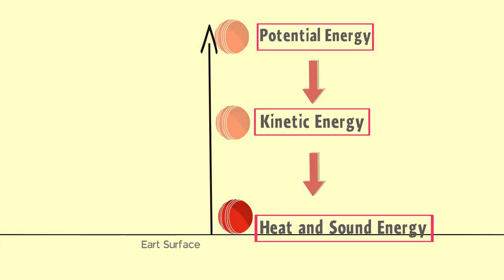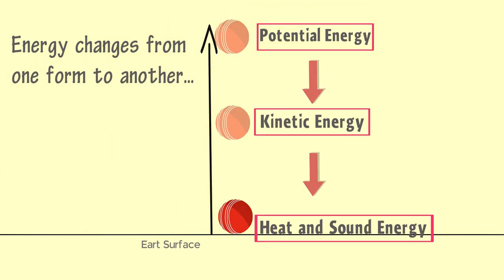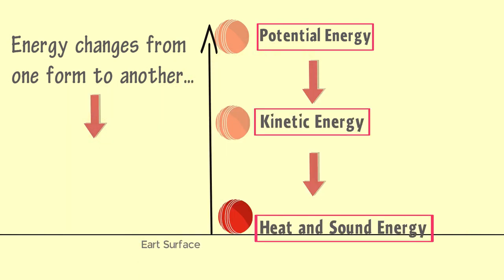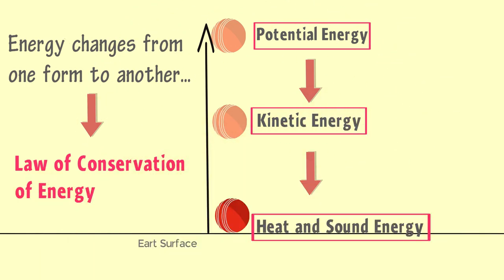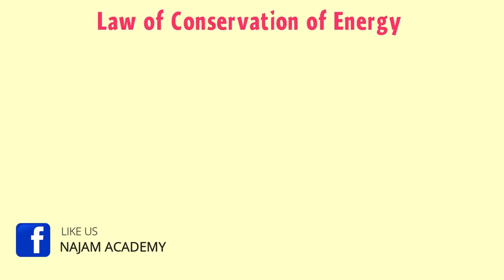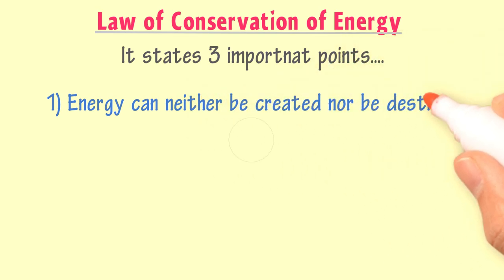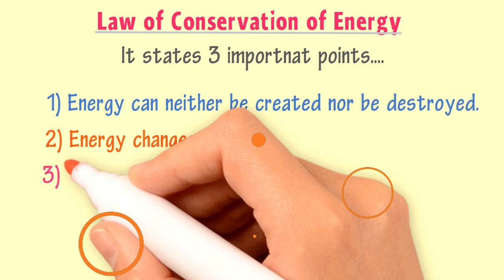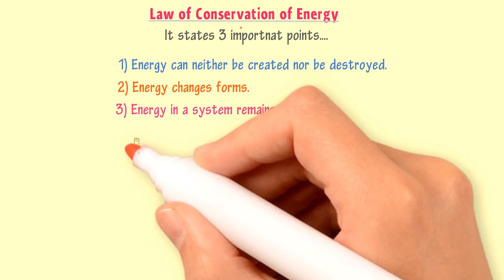From this example, we also learn that energy changes from one form to another. To understand this form-changing phenomenon of energy, scientists put forward the law of conservation of energy. It states three important points: energy can neither be created nor destroyed; energy changes into different forms; and the total energy of a system remains constant.